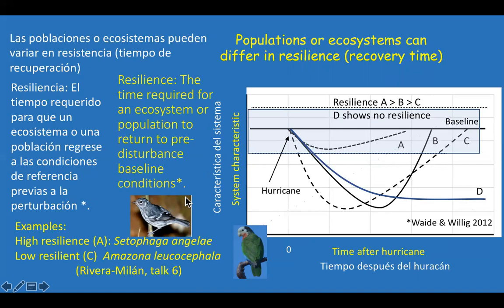Frank points out that the Elfenwoods warbler — an endemic bird in Puerto Rico that he and collaborators have followed in the Luquillo Mountains — showed relatively high resilience, returning very quickly to the baseline, although the baseline itself had changed and was fluctuating throughout the study. At the other extreme, Frank points out that the Bahama parrot in the Bahamas shows relatively low resilience — it takes quite a while to get back to the baseline.